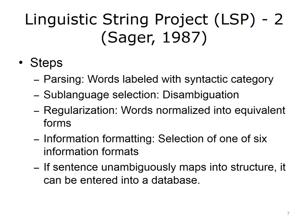The first step was parsing, which consisted of labeling each word with a syntactic category such as verb, noun, etc. The next step was choosing a sublanguage that helped in disambiguating words and sentences. This was followed by regularization of the language, so words were normalized into equivalent forms. Finally, there was an information formatting step where one of the six information formats was selected. If the system unambiguously mapped into one of those formats, it was then entered into a database.